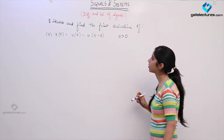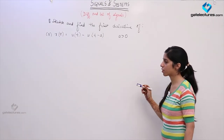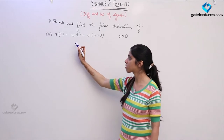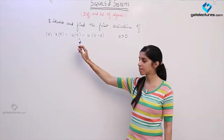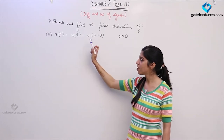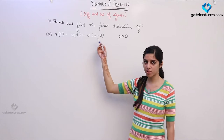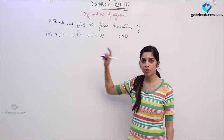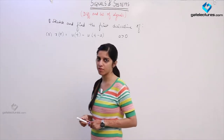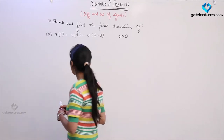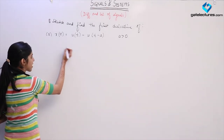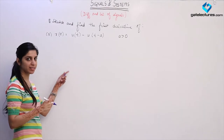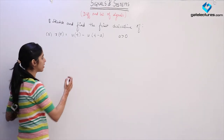Now we are going to look at this question on derivatives of a function. We are given a function which is a difference of two step functions: one u(t) and a shifted step function u(t minus a). We are required to find the derivative of this function. Firstly, I am going to sketch this function, then find the derivative and sketch the derivative also.